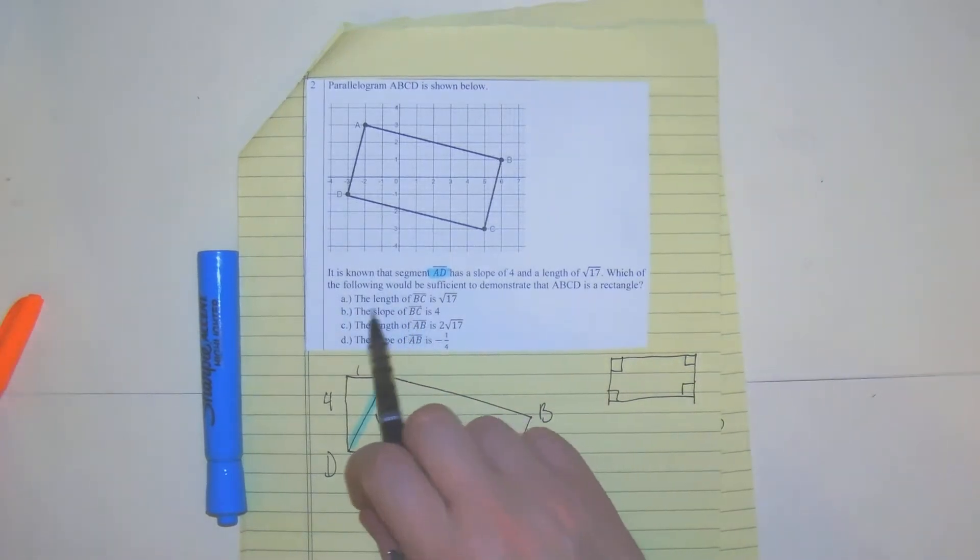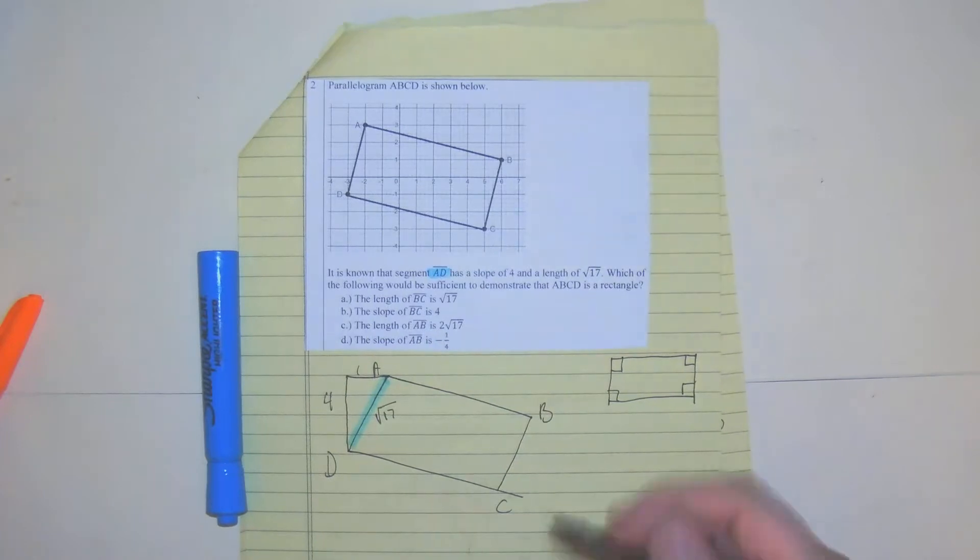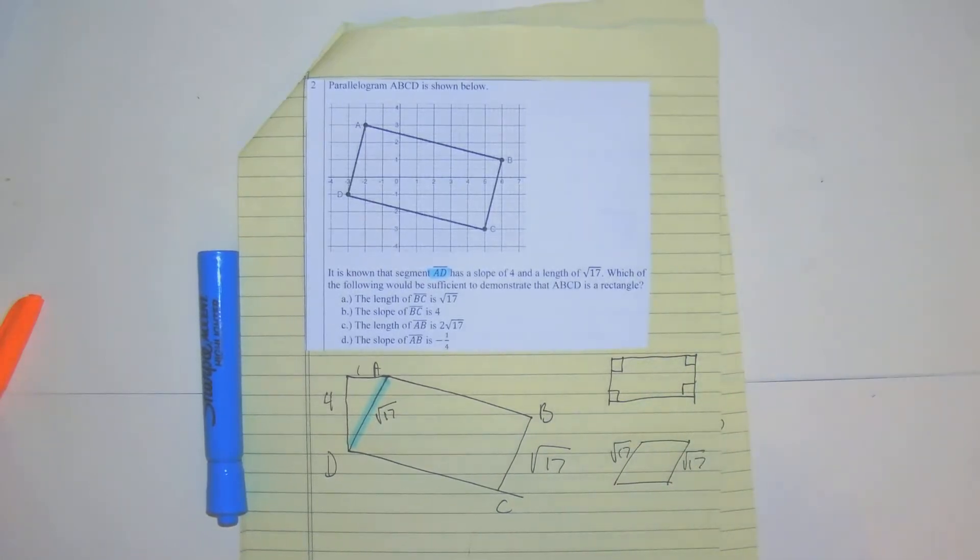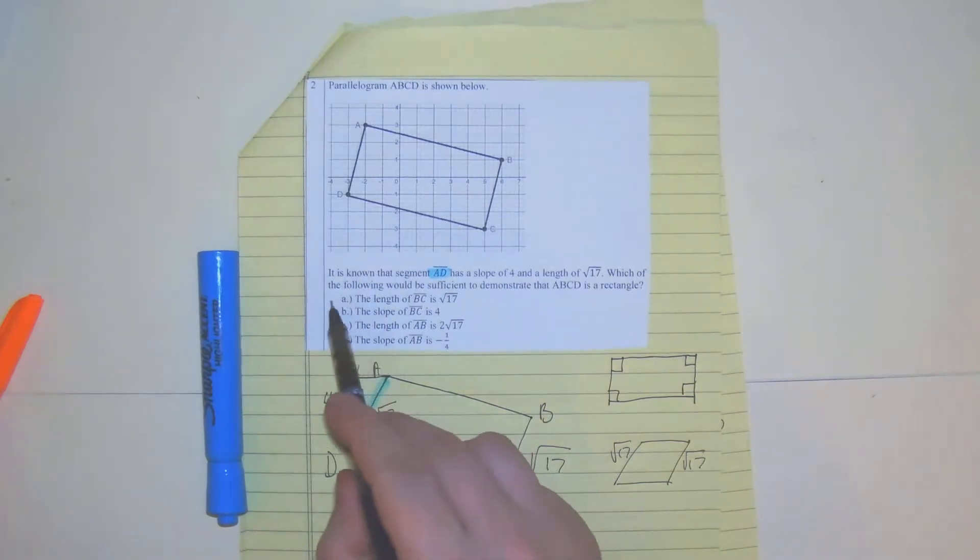So the first thing, the length of BC is square root 17. This right here, that would not prove that it's a rectangle because we can have a parallelogram where the opposite sides are congruent. So A is not right.